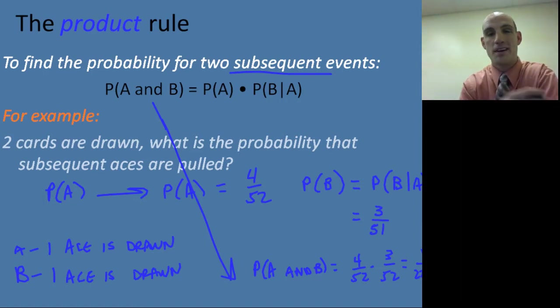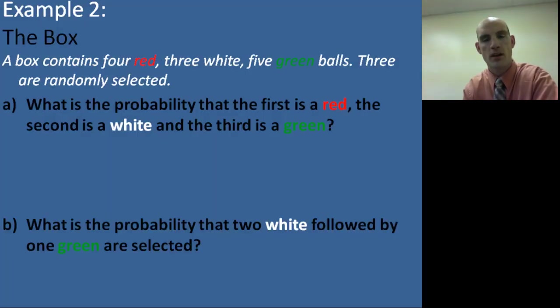Okay? That's tough to take. Because now the probability goes down. Because 1 divided by 221 leaves us a low probability that that's actually going to happen. Okay? Let's take another example. A box contains four red, three white, and five green, let's say, racquetballs or bouncy balls. Three are randomly selected. What is the probability that the first is a red, the second is a white, and the third is a green? Three subsequent events.